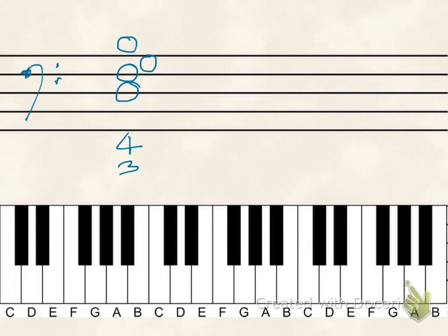So a seventh chord in second inversion, or a seventh chord with the fifth in the bass, you'll see the bass note and a four-three.